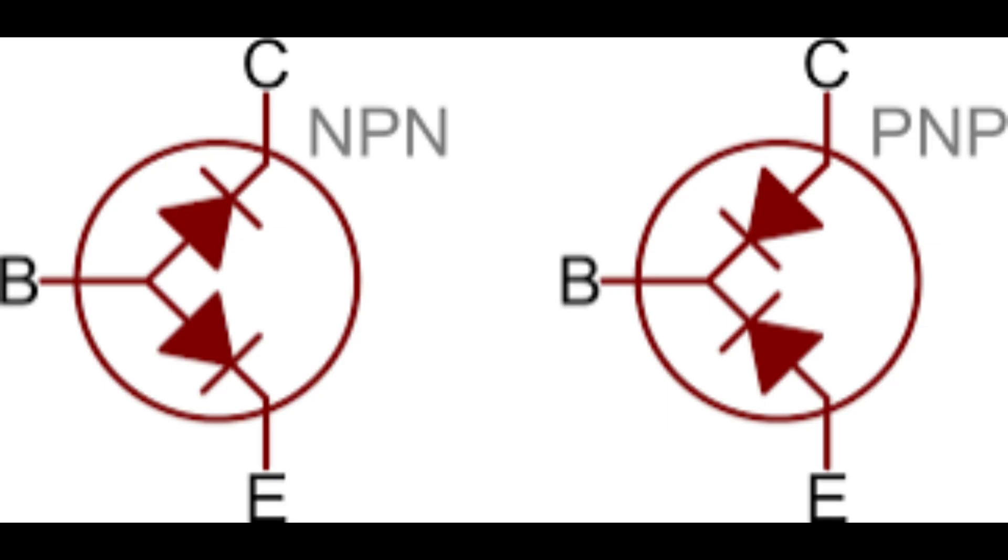Each semiconductor region is connected to a terminal, appropriately labeled emitter (capital E), base (capital B), and the collector (capital C).